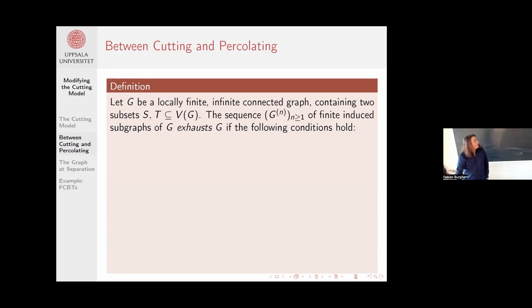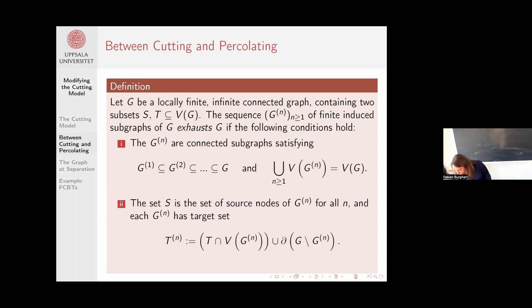The formal definition is as follows. First of all, the sequence should be increasing and together they cover the entire host graph. Second, the set S is contained in all of these graphs, and this is the set of sources for each of them. The target sets for the graph Gn consist of all the targets that are already in the graph together with all the vertices in the graph that connect to something outside.